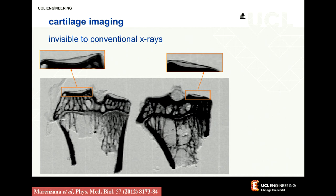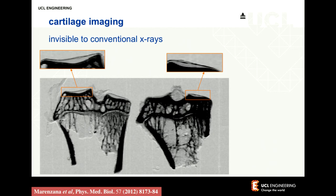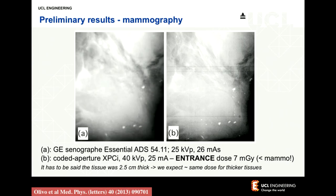What I've told you so far is effectively a half-truth, because making our system sensitive to phase effects — refraction — doesn't mean it becomes insensitive to attenuation. This image is a mixture of conventional absorption and phase. For some applications, the mixed image works fine: you have a conventional-looking image the doctor is used to, plus more visibility. For other applications, you can do something more sophisticated and separate out attenuation from phase.